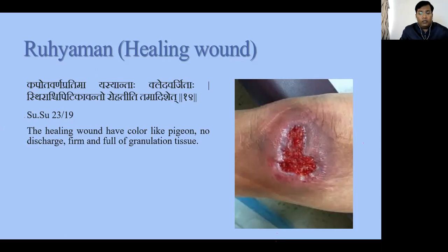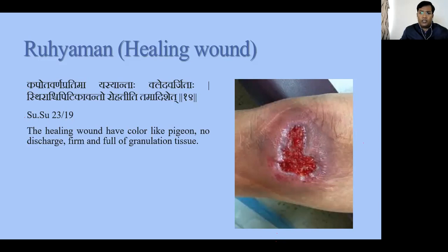The features as Sushruta described: Kapoth-Varna-Kittimaha, Yasyantaha, Klej-Varntha — the wound color is Kapoth-Varna, just like the pigeon color, which is a little bluish. A healthy wound is always pink in color, but now due to healing there is angiogenesis — formation of new vessels and granulation tissue — that wound converts to a slightly bluish color, and the granulation is a little harder than in a healthy wound.